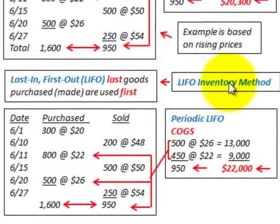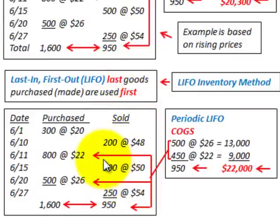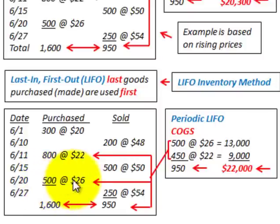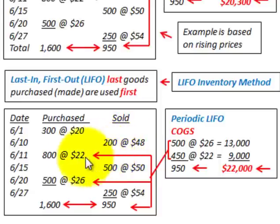Moving down to the LIFO inventory method — that's just the opposite. That's where the last in is the first out, so the last goods purchased are used first. With LIFO, we go to the end of the month and use the latest purchases to cost our sales. Our cost of goods sold comes from these most current, or latest, purchases.